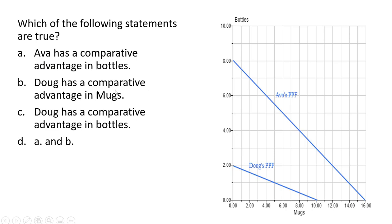Statement B: Doug has a comparative advantage in mugs. To calculate Doug's opportunity cost of producing mugs, we take the vertical intercept 2 and divide by 10, giving us one-fifth. Every time Doug produces a mug, he gives up 1/5 of a bottle. Ava gives up more — 8 divided by 16 is one-half of a bottle to produce a mug. So statement B is correct: Doug has a comparative advantage in mugs. The correct answer is A and B.